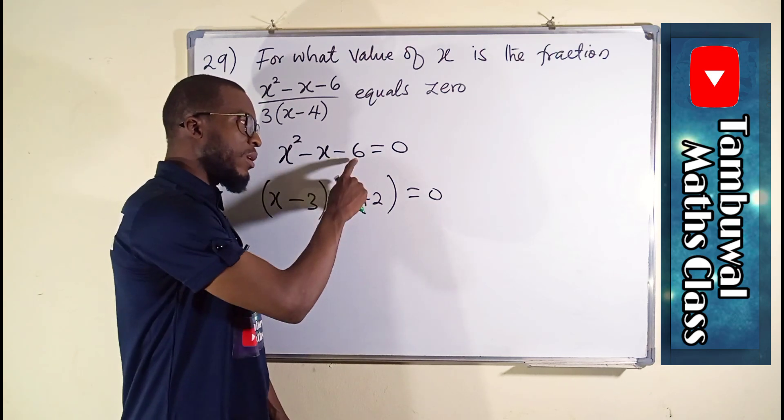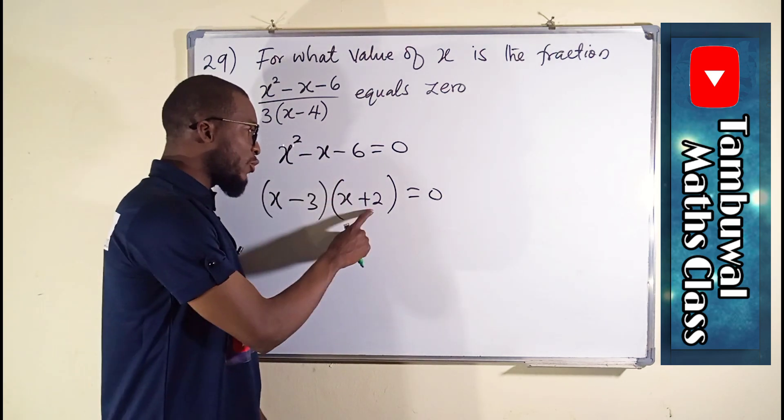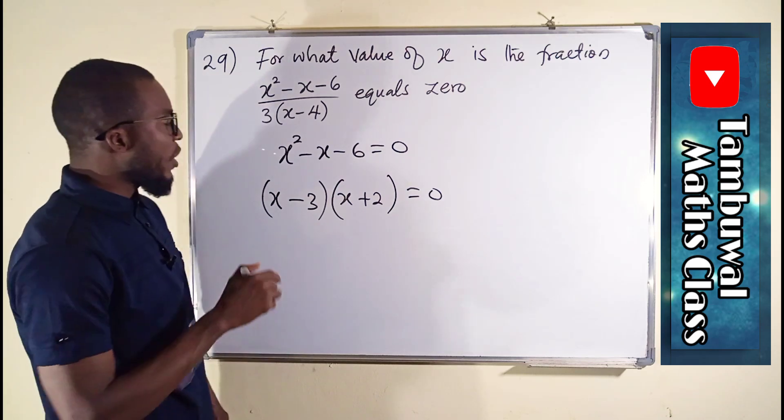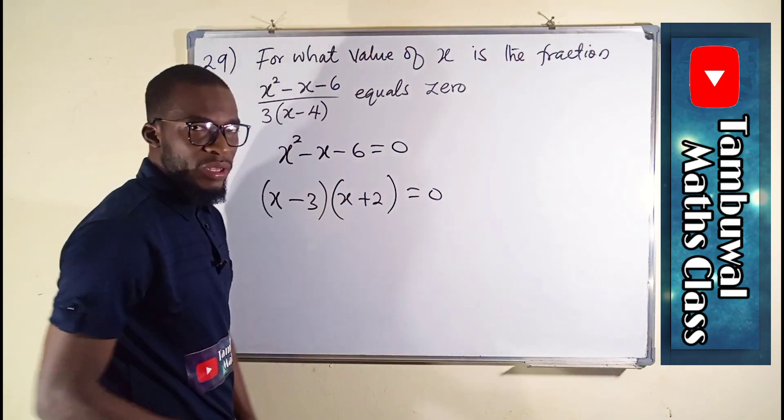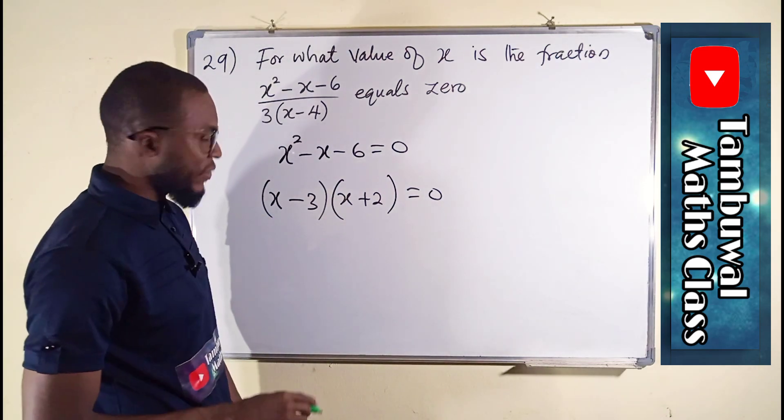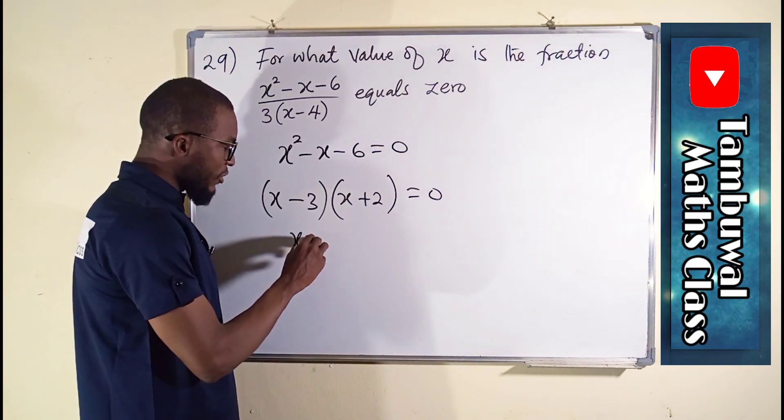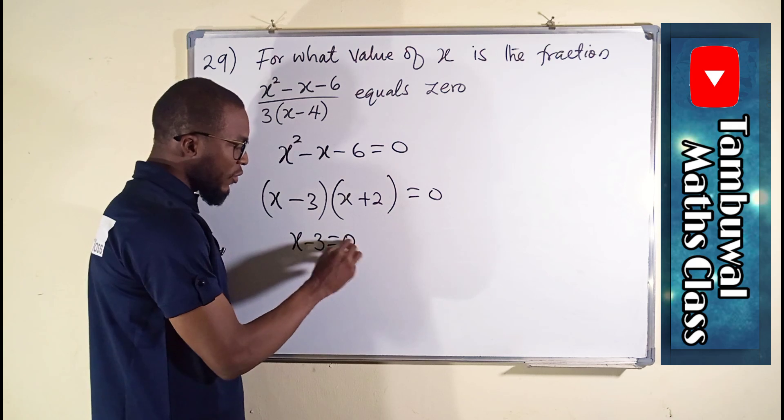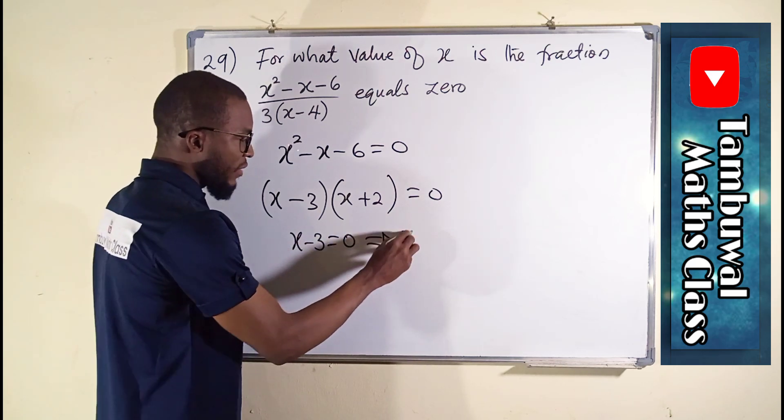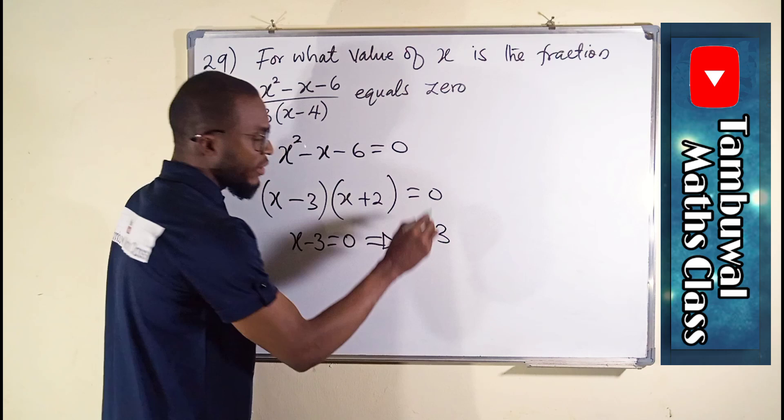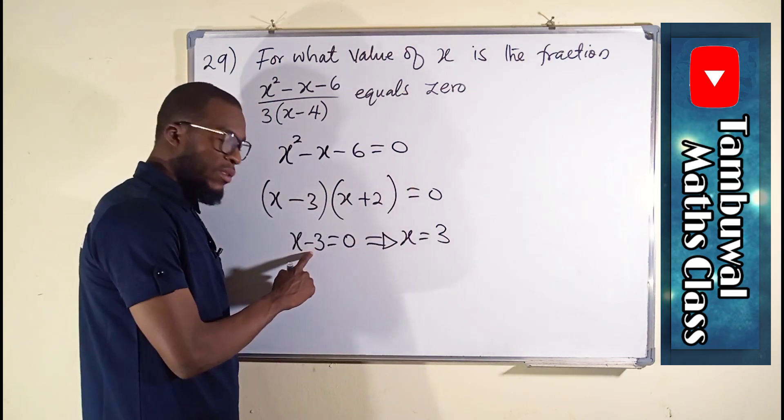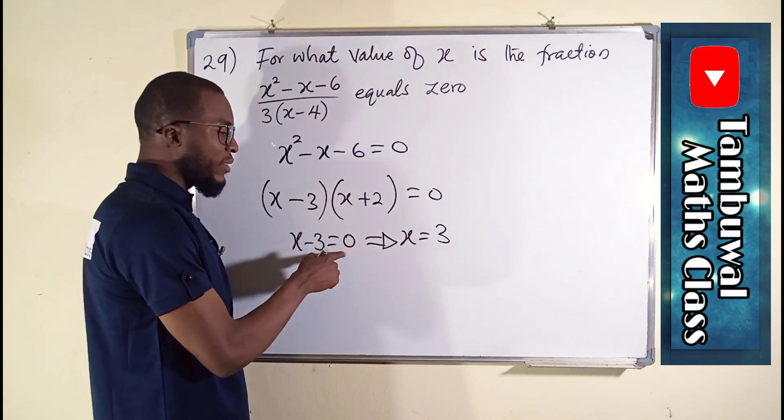We are going to set each of these factors to be equal to 0 in order to obtain the corresponding values of x. For x minus 3 equals 0, this implies that x equals positive 3, because once negative 3 crosses over the equality sign it becomes positive.